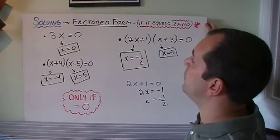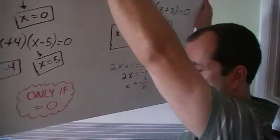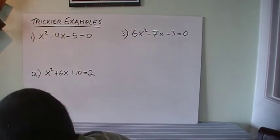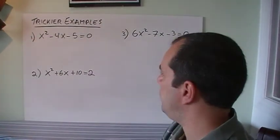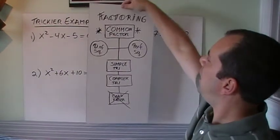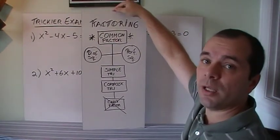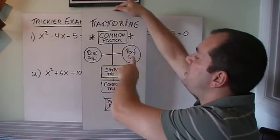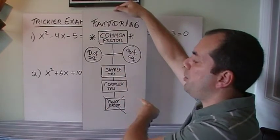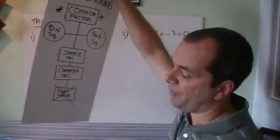But let's get a little trickier. What if it's not in factored form? If it's not in factored form, I'm going to have to use my factoring tree. Remember that I need to do common factor first, check for special cases, simple trinomial, complex trinomial as we covered in the previous videos.